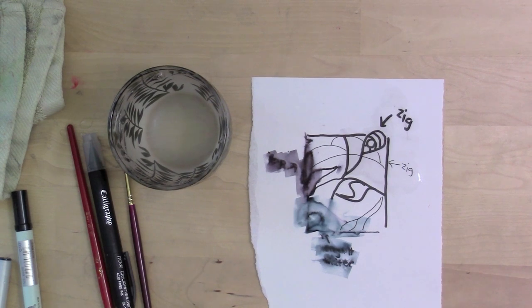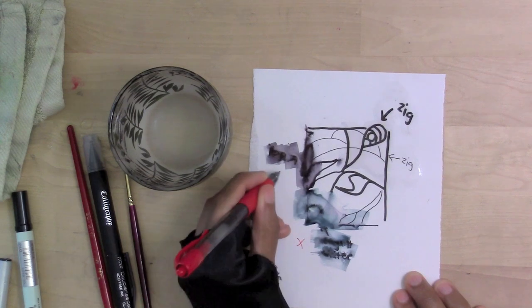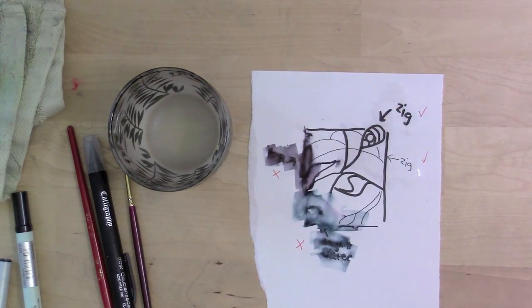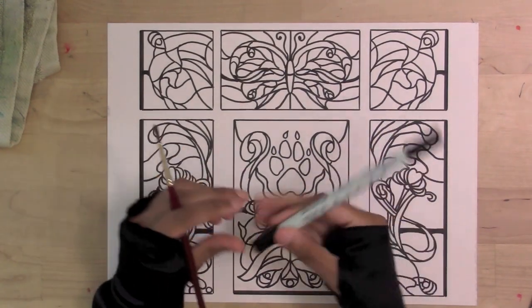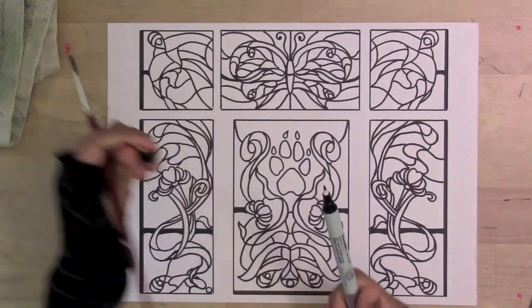If you want to do a sort of blurry wash, like a blurry pen and ink wash and then watercolor on top, these will work great for that. But for this project, the Zig marker is going to be my choice because I don't want these lines to move at all.